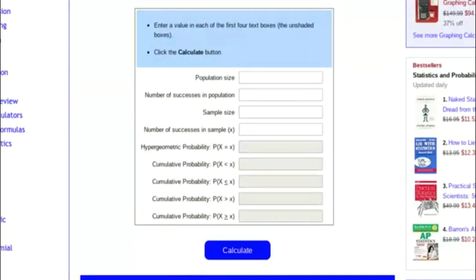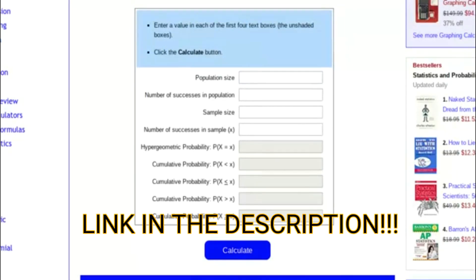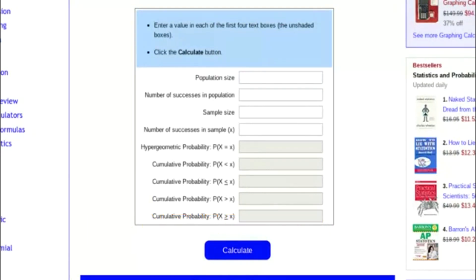So basically if you ever want to run some theoretical calculations, you just Google hypergeometric calculator. It'll bring up this page stattrek.com where you can do it on your mobile phone or on a computer, and this is a really useful tool.